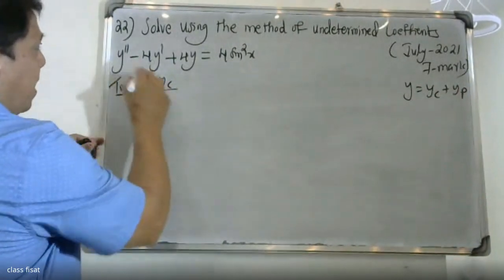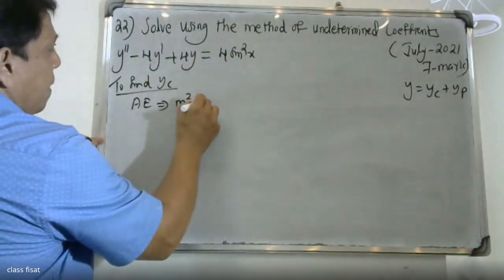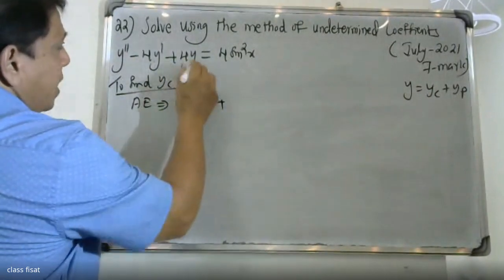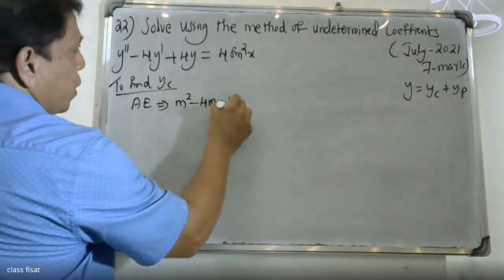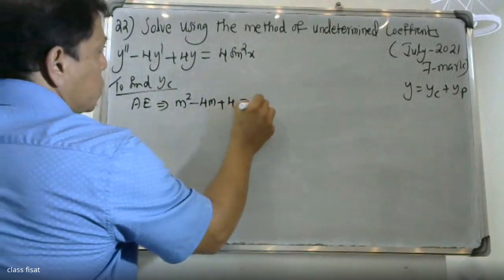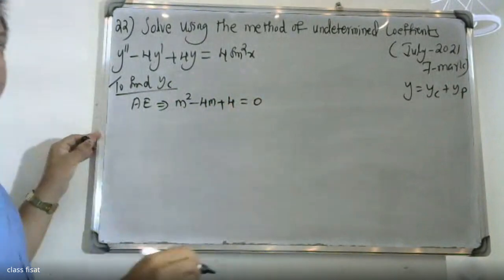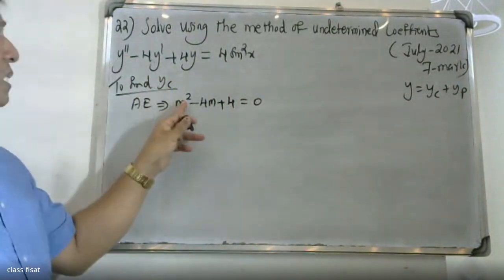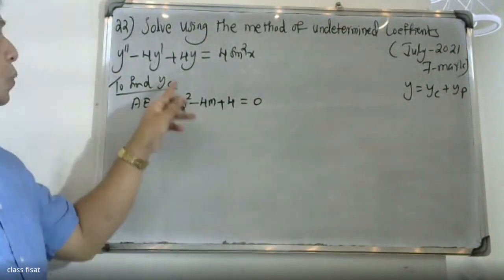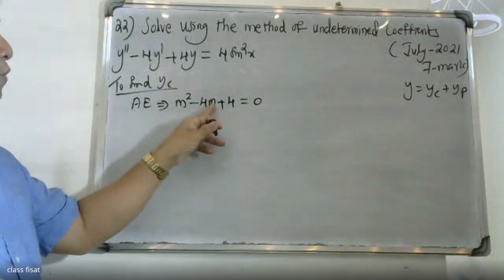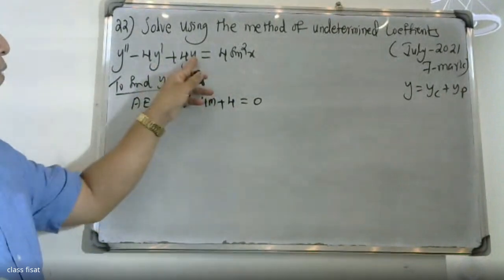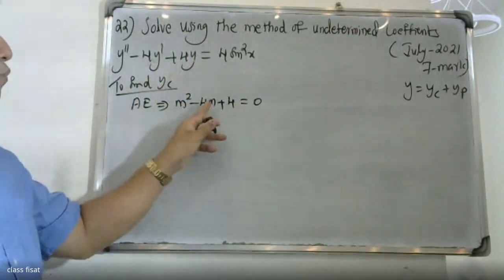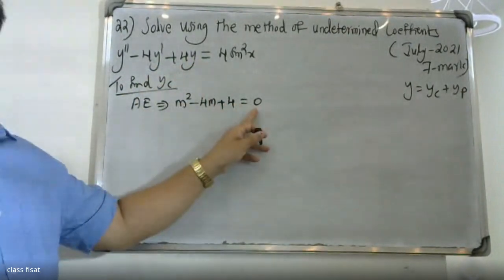For the complementary solution yc, we set up the characteristic equation. y'' gives m², y' gives m, y gives 1, so we have m² - 4m + 4 = 0.